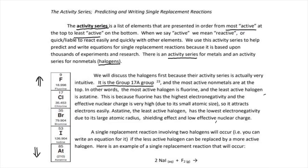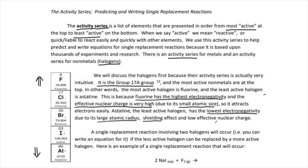So fluorine will always replace chlorine, bromine, iodine, and astatine in chemical reactions. Chlorine will replace bromine, iodine, and astatine, but it will not replace fluorine. Fluorine has the highest electronegativity in that group and its effective nuclear charge is incredibly high due to the fact that it has a really small atomic size, so it attracts electrons really easily and therefore reacts really easily. Astatine is at the very bottom of that group and has the lowest electronegativity, the largest radius, the greatest number of shields, and the lowest effective nuclear charge, which means that the nucleus in astatine struggles to react with things.